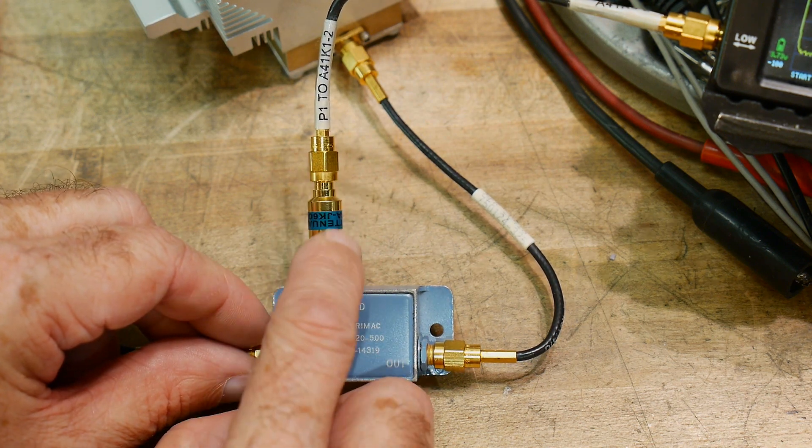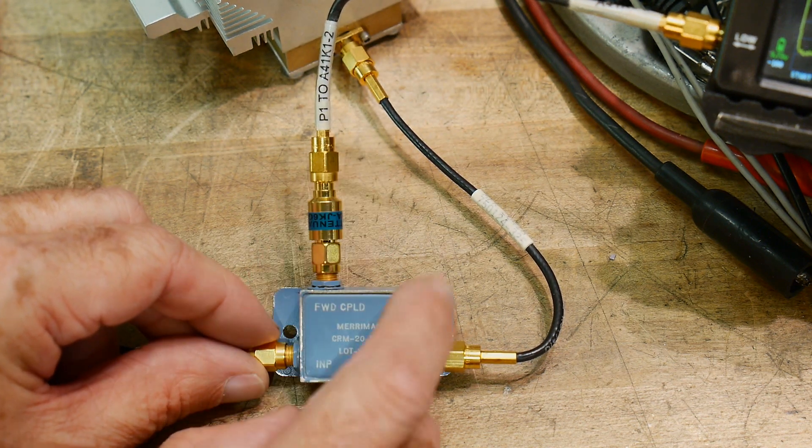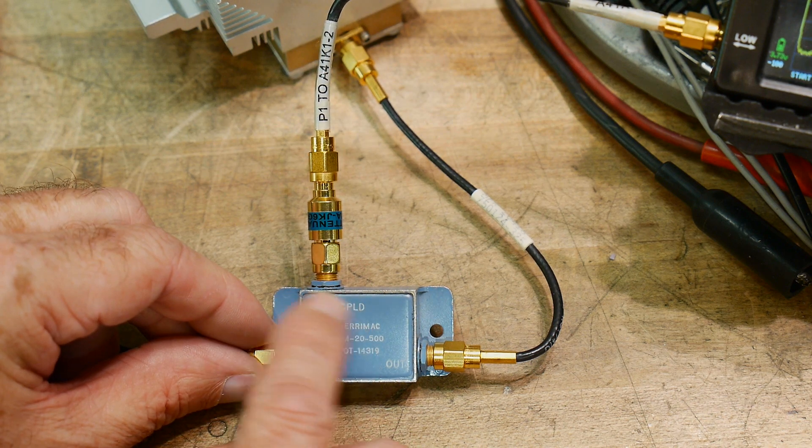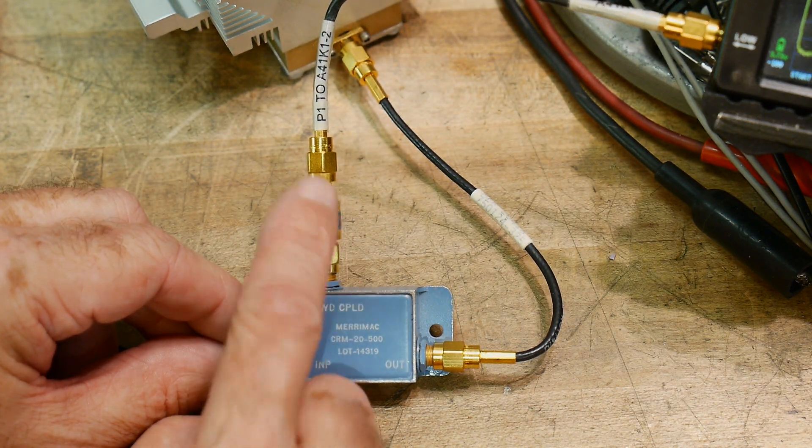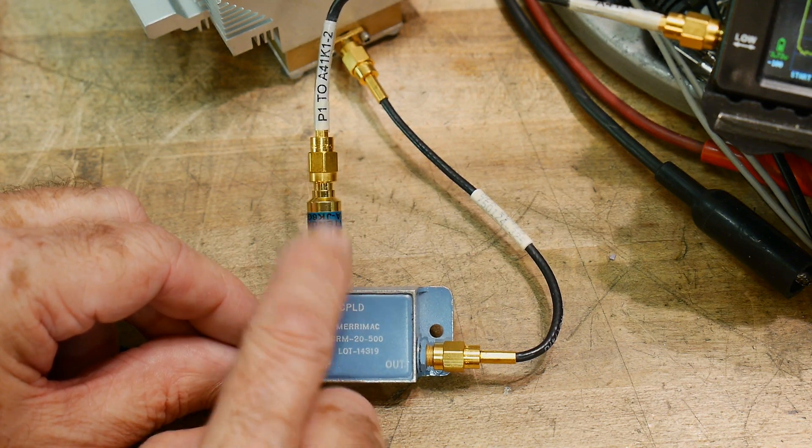So I have here a 30 dB attenuator. So we have 13 from the coupler and then another 30. So we have a total of 43 dB of attenuation.